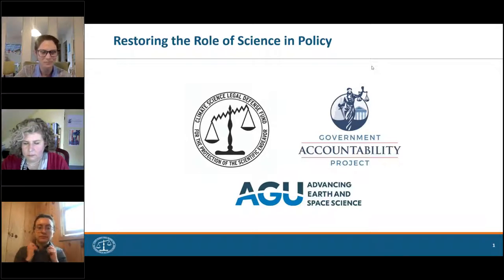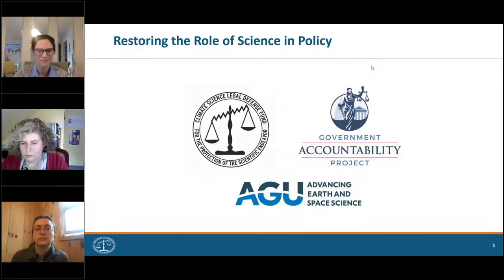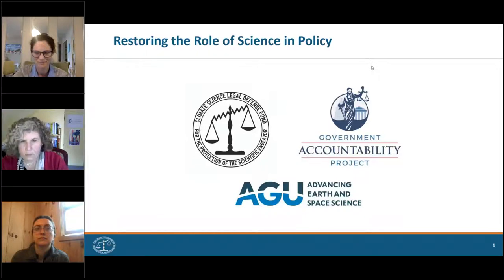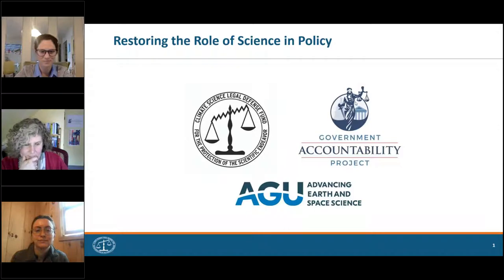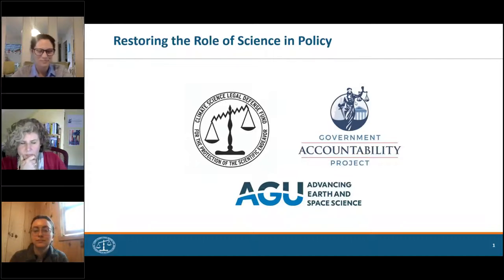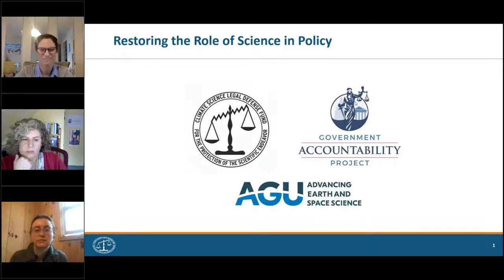AGU and the Climate Science Legal Defense Fund have been partnering together for nearly a decade on issues like scientific freedom and the rights of scientists, and AGU and the Government Accountability Project have been working together for the last four years on things like scientific integrity defense. We are very excited to be working on the offensive end of this and giving all our scientists some great tools to work in science policy. We are going to go to Augusta Wilson with CSLDF to start. Please go ahead and drop questions in the question box — we'll have time at the end for Q&A.